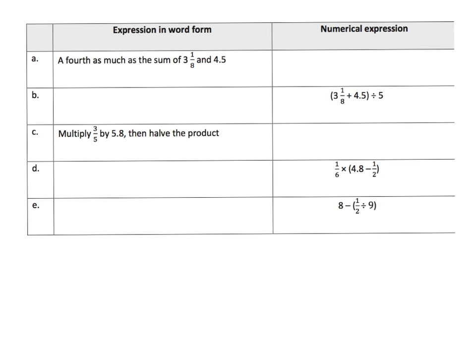More of the same, we're going to go back and forth between expressing it in word form and expressing it as a numerical expression. So here we've got a fourth as much as the sum of these two guys. A fourth as much, so that's going to be one fourth times, and then we're going to add 3 and 1 eighth plus 4.5 or 4 and 5 tenths.